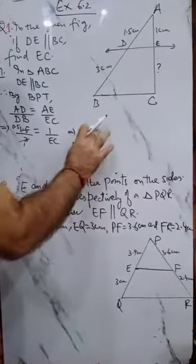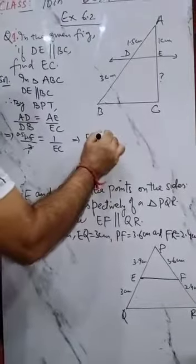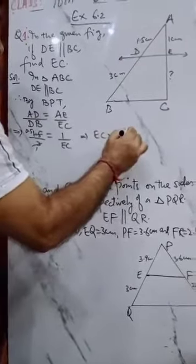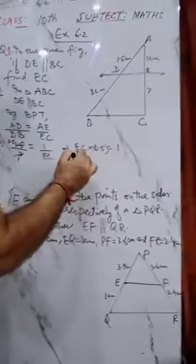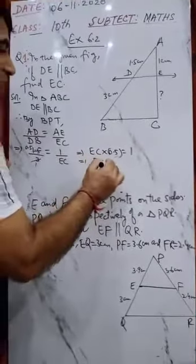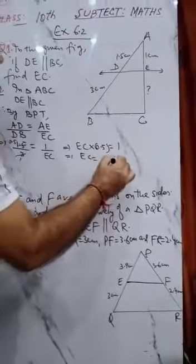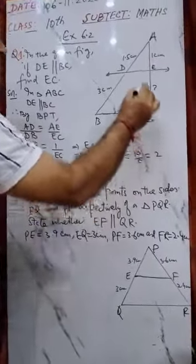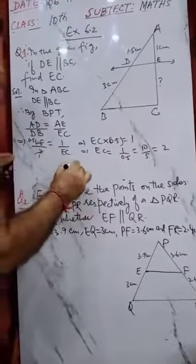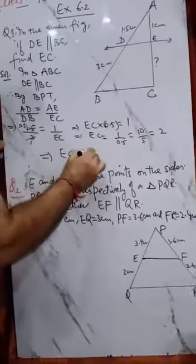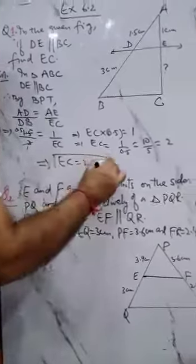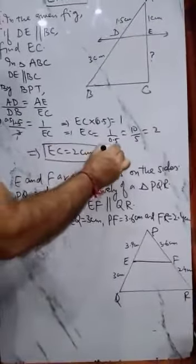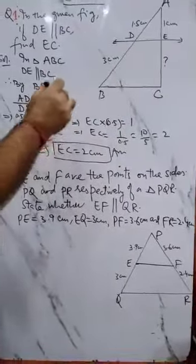So that means EC is equal to 1 upon 0.5. You can say that is 10 upon 5, so EC equals 2.